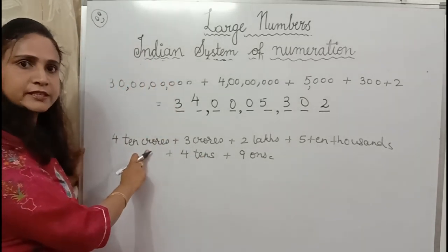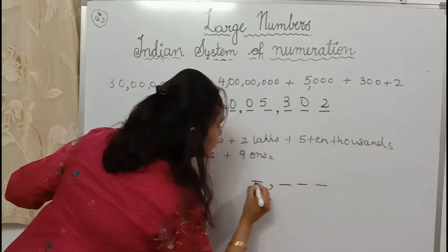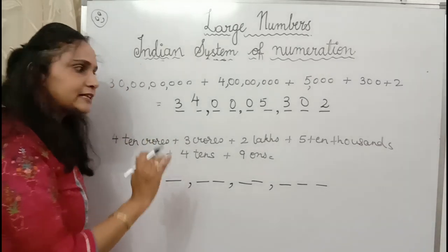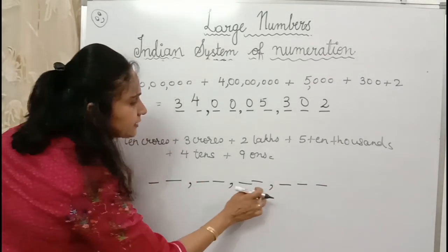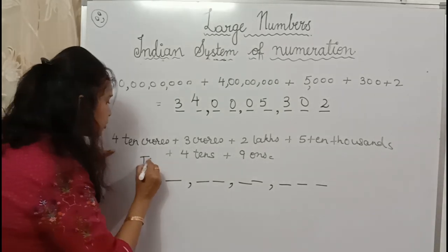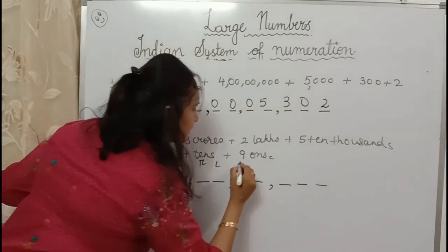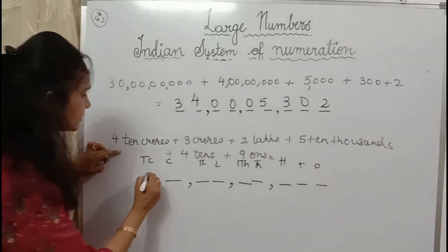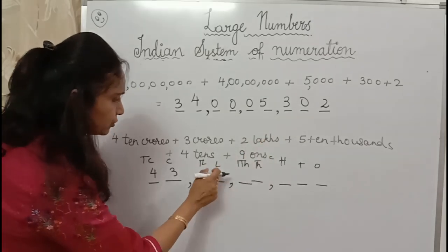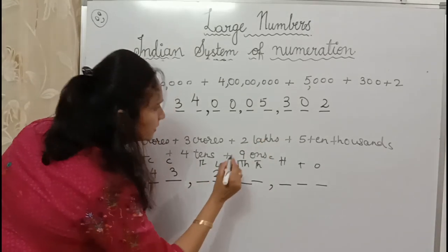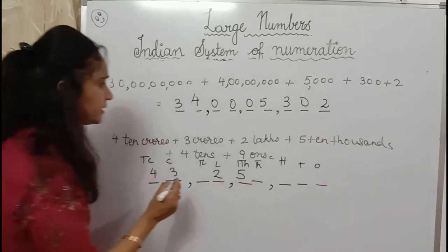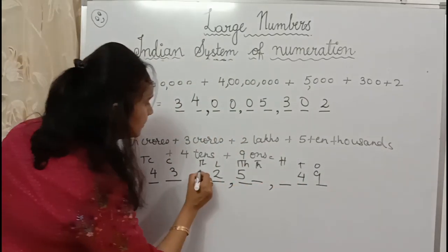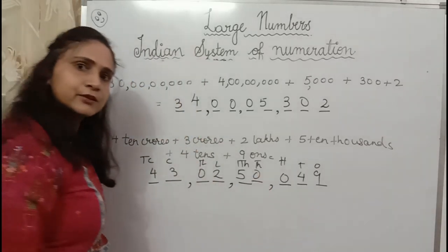Here again the biggest place value is ten crore — make the dashes for 9 places. Fill: 4 at ten crores, 3 crores, 2 lakhs (ten lakhs place is empty — put zero), 5 at ten thousands, 4 at tens, 9 at ones. Put zeros for all empty places. So you get your number. I hope you understood this.